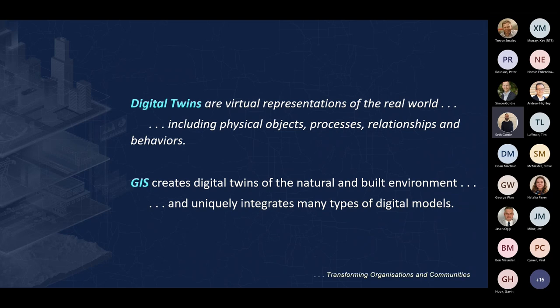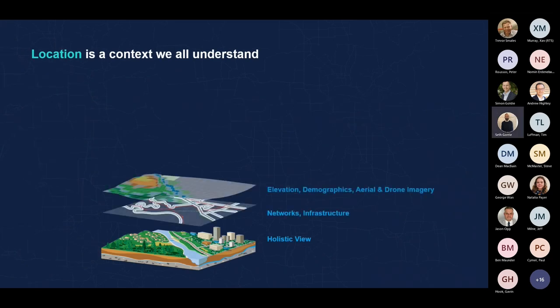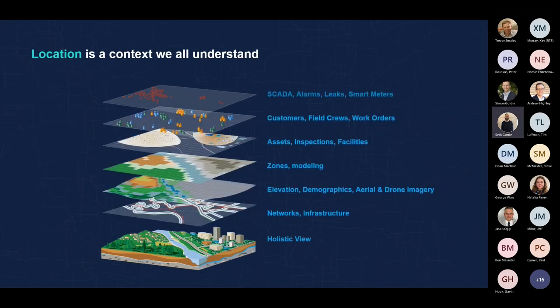Rather than reading it as strictly an urban environment, what this enables us to do is integrate the multitude of information model typologies — everything from utility network information models to landscape information models and so forth. Rolling back to basics from a GIS and foundational spatial perspective, GIS offers us this ability to look at that holistic view of all things, whether they are physical assets in the real world or invisible aspects such as demographic data.